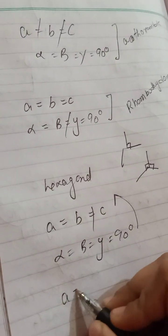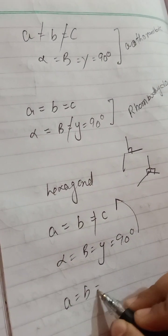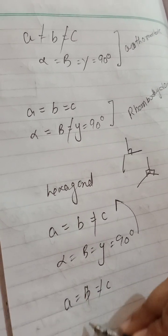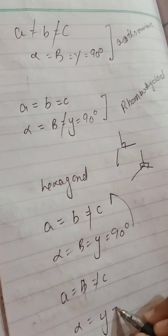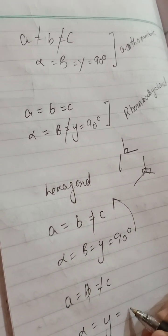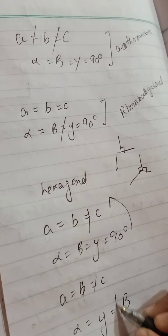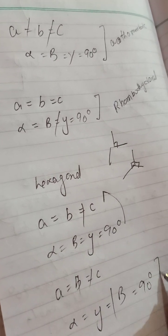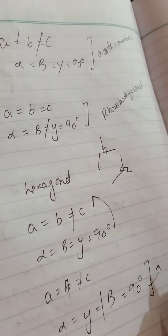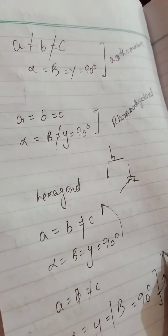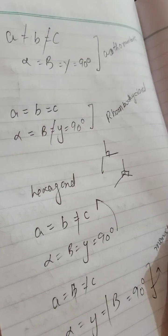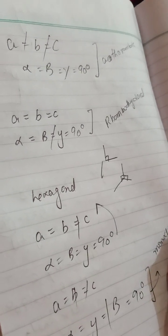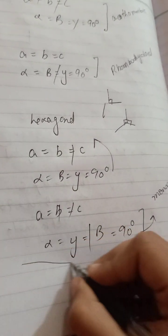The sixth one: when a ≠ b ≠ c, alpha = gamma = 90° but beta ≠ 90°, the structure formed will be monoclinic. We have to learn all of these for the MCQs, as the examiner can ask about all these shapes.